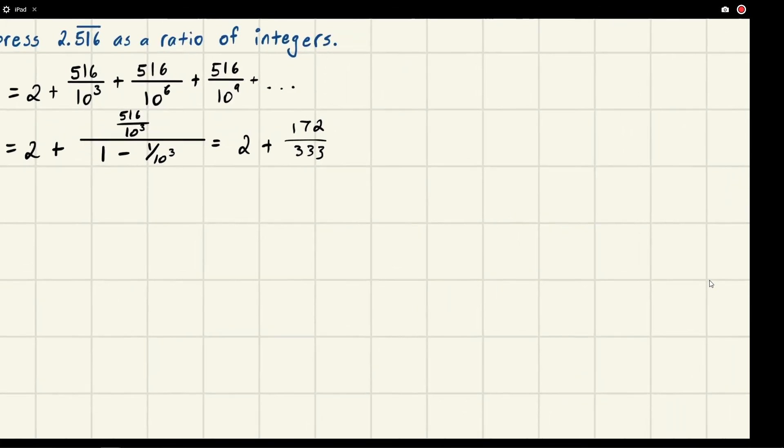Now what we want to do is get this 2. Recall we can make this 2 times 333 over 333. This gives us the same thing as 2, and then we can add that to our number here to get our answer.